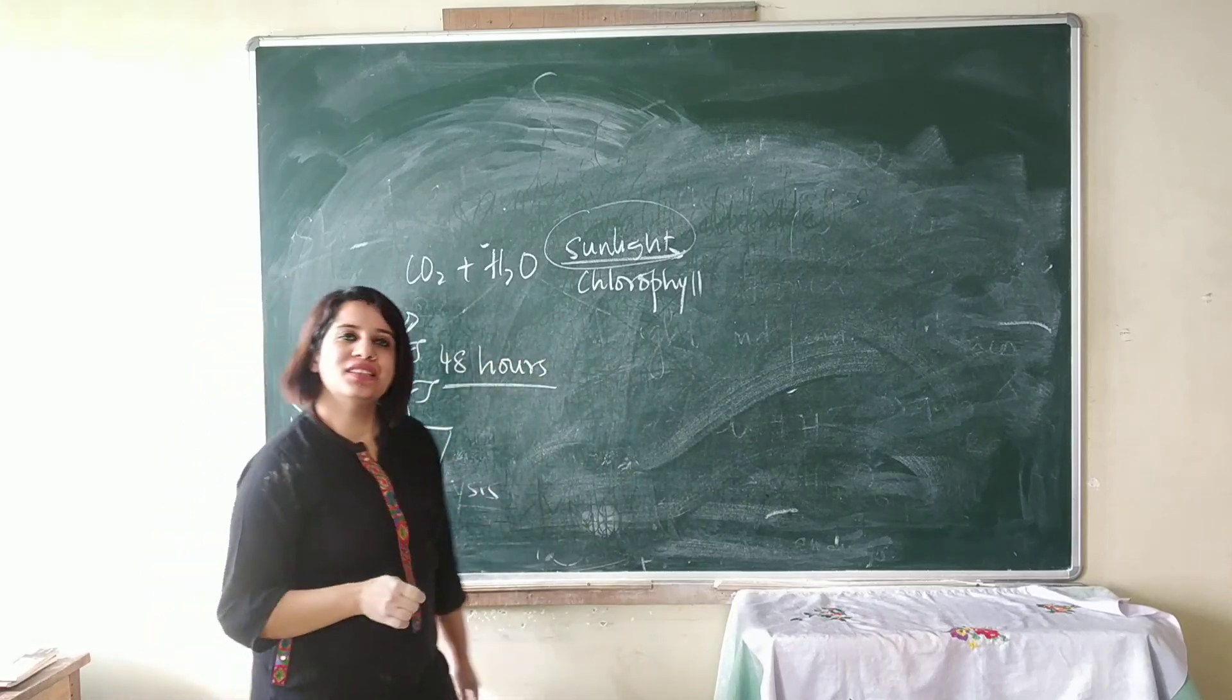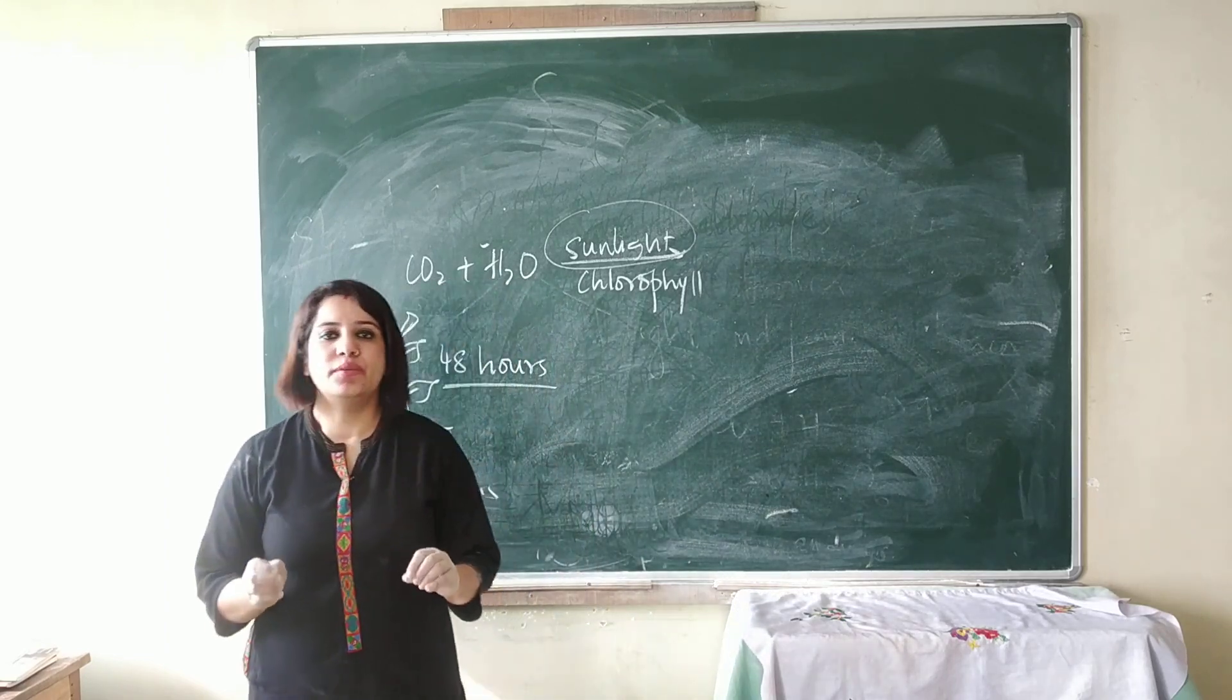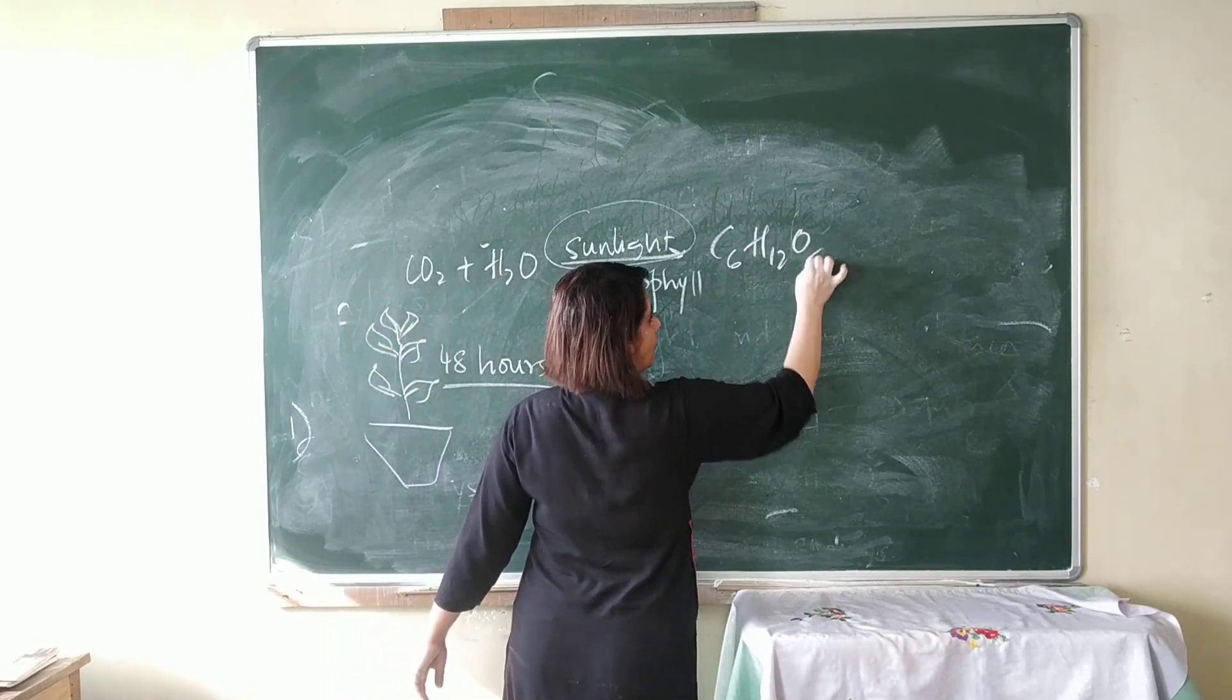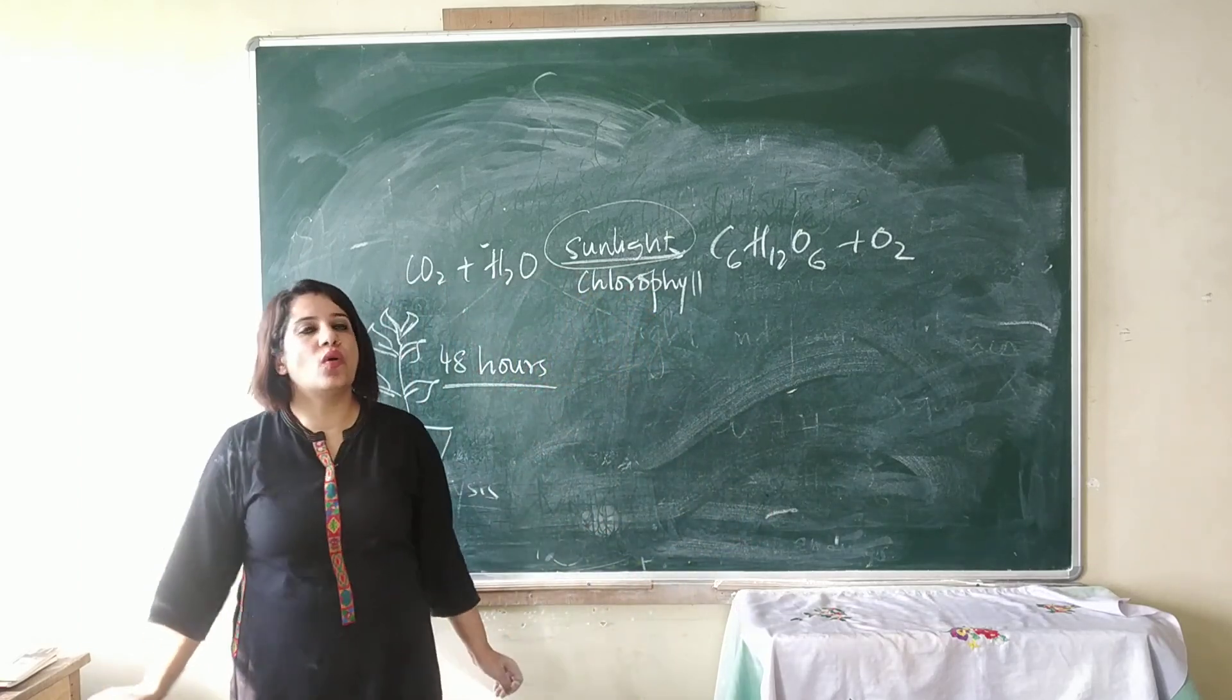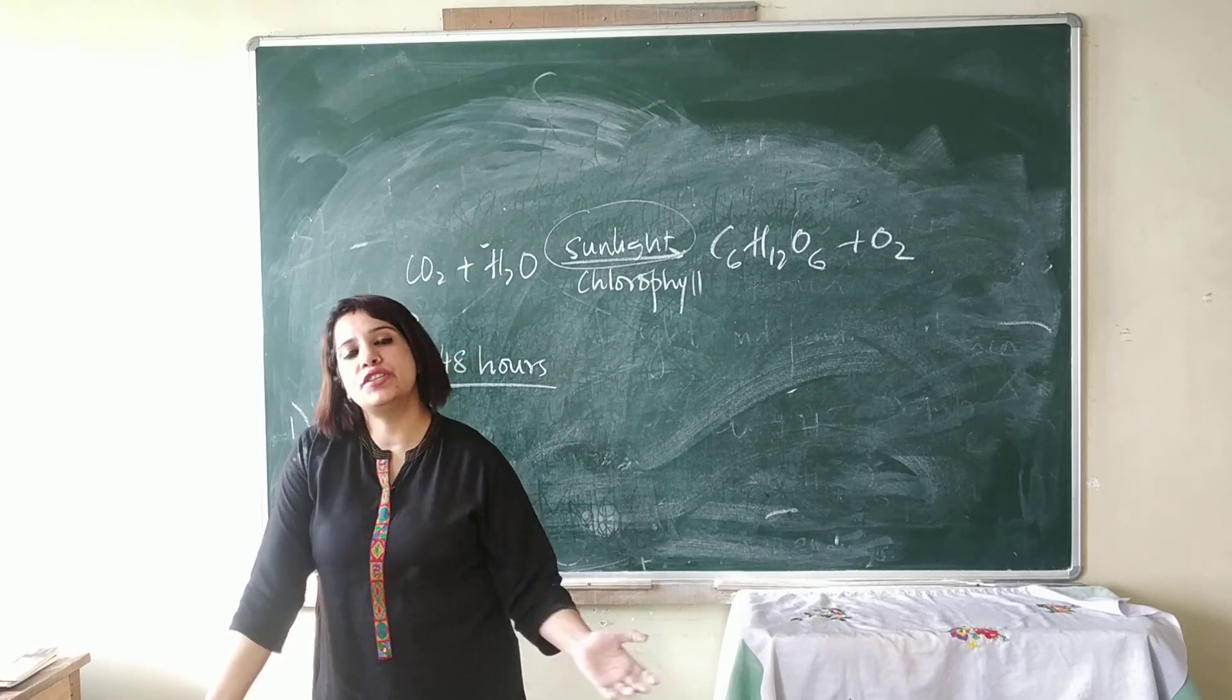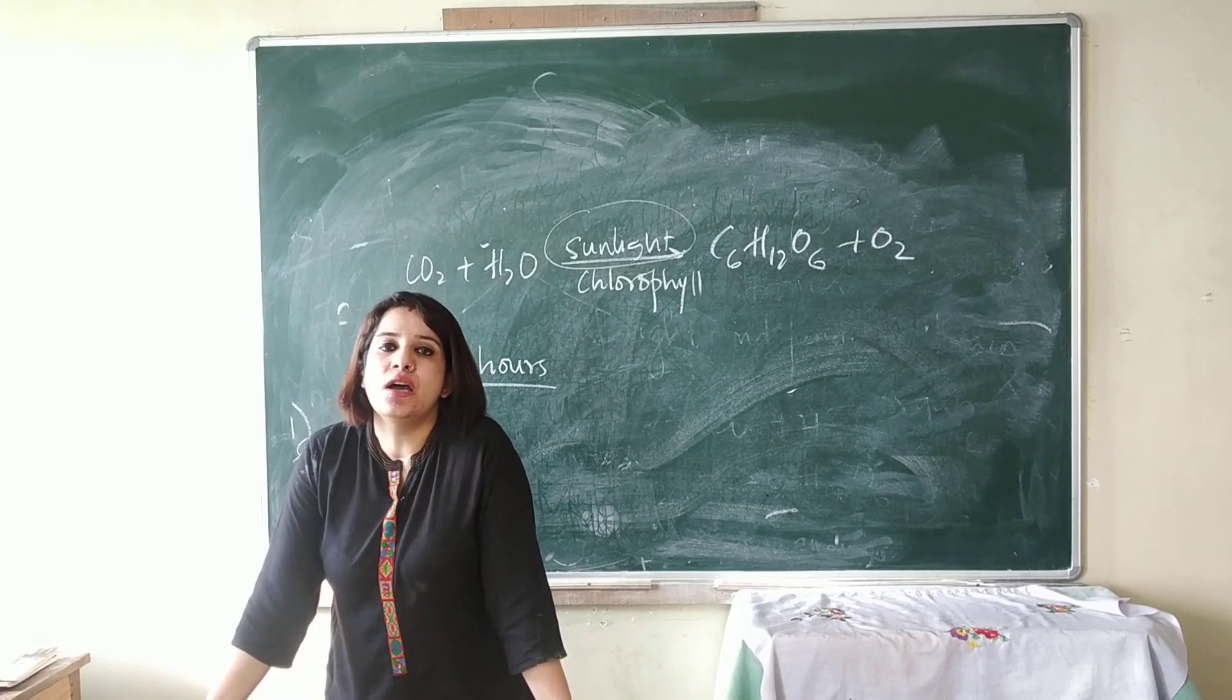Why are we keeping it in a dark room for 48 hours? To destarch it. As I've told you, excess glucose is stored in plants as starch. When glucose is required, the starch is converted to glucose and utilized by the plant.